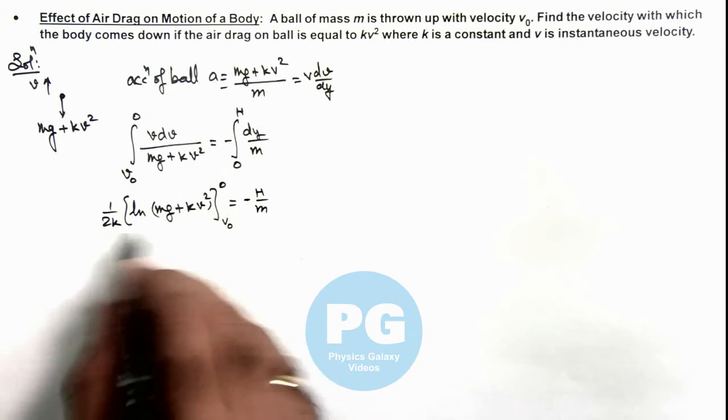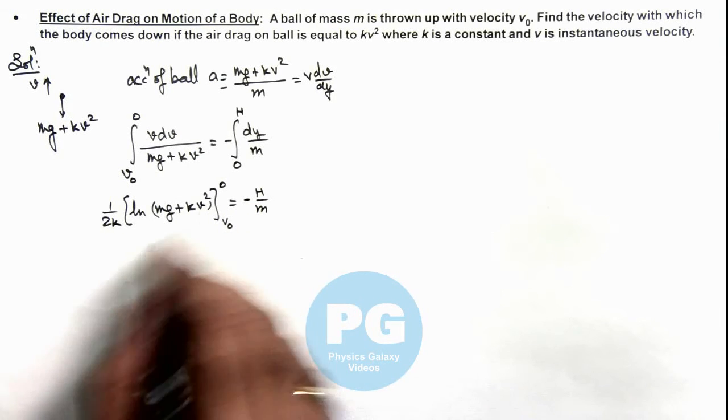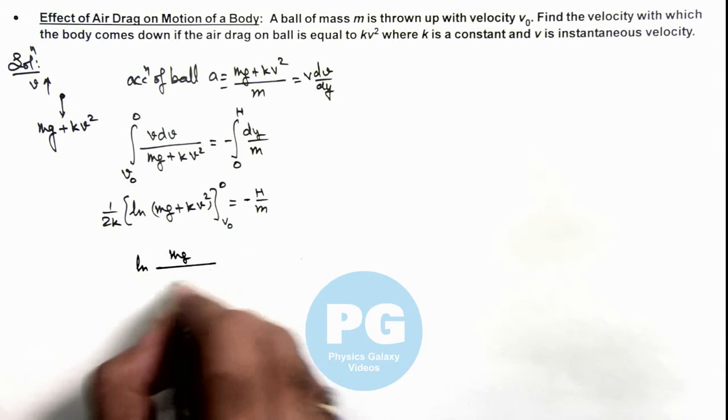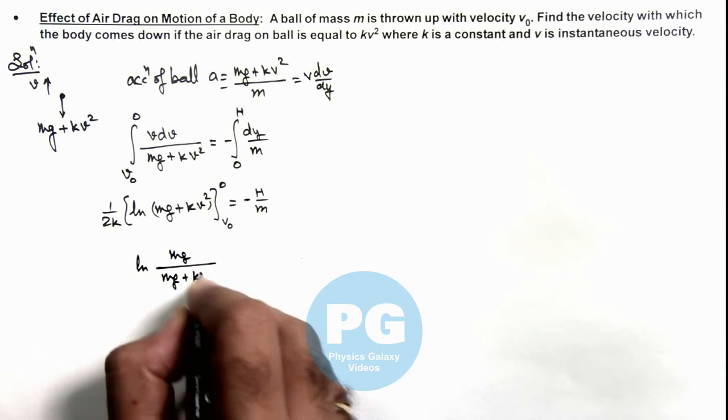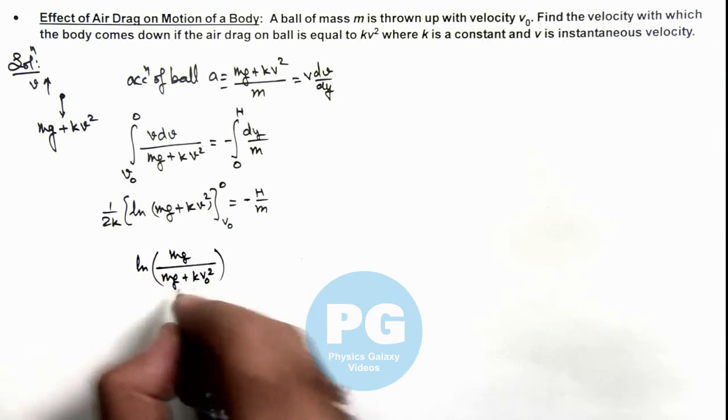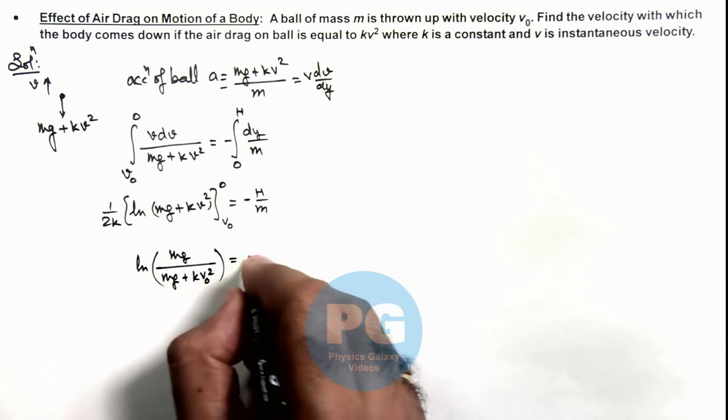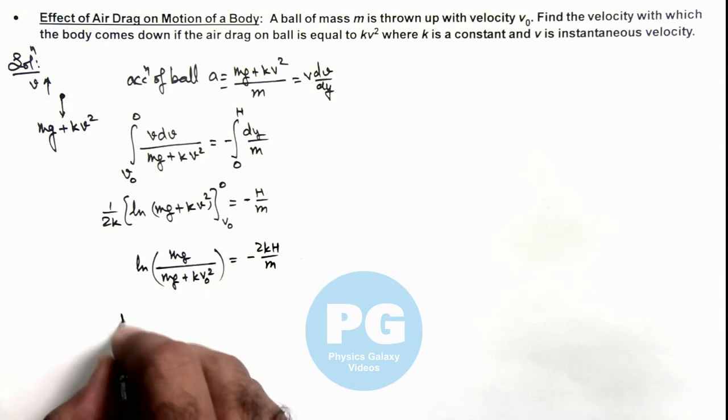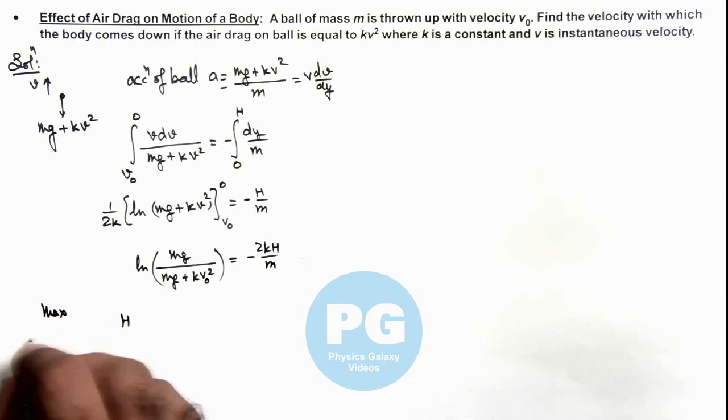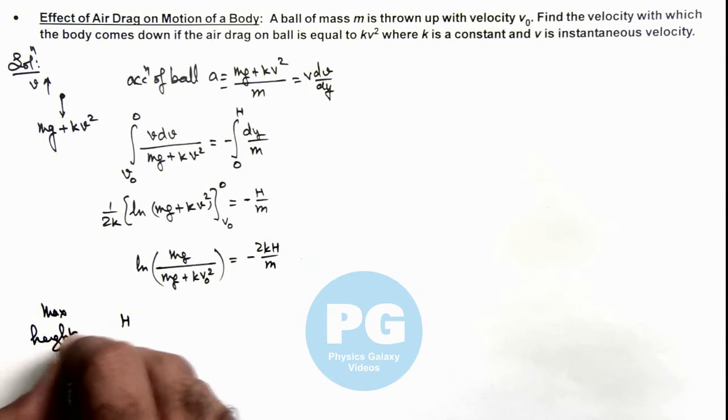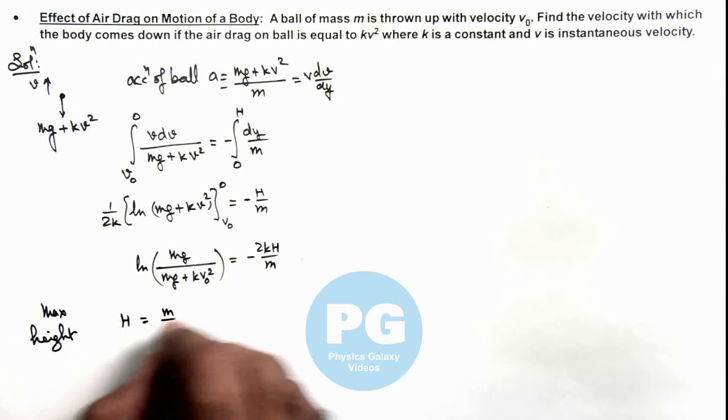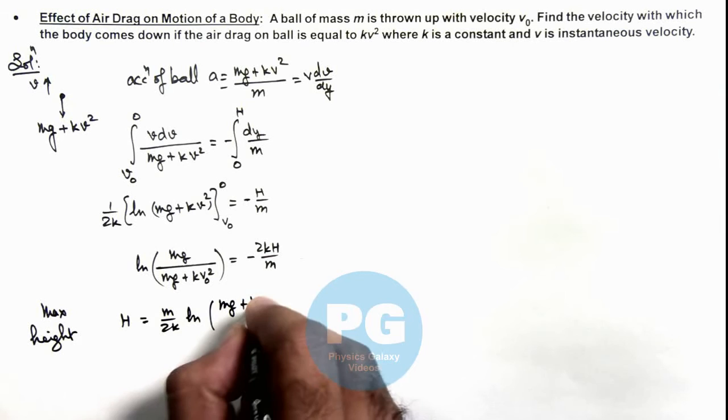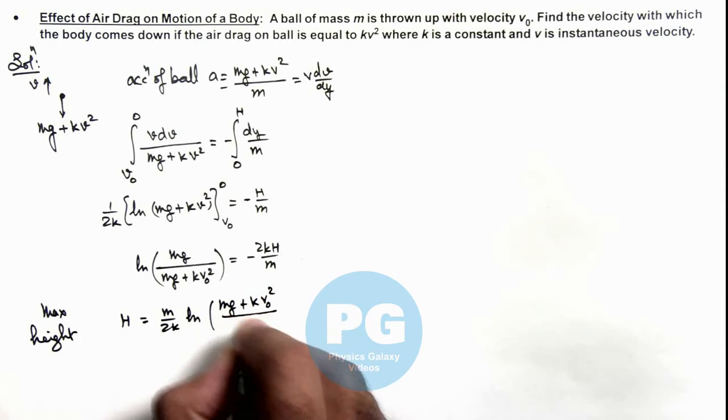And if we substitute the limits and simplify it, this will give us ln of mg over mg plus kv₀² is equal to minus 2kH over m. Or the value of maximum height to which the ball will reach is given as m by 2k ln of (mg plus kv₀²) by mg.